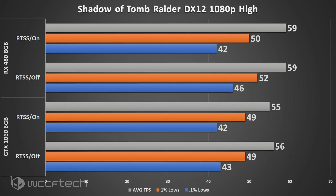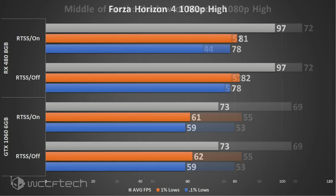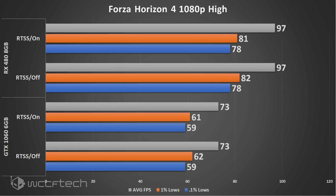Moving on to Middle-earth: Shadow of War, there's another pretty hefty difference — a 6 FPS difference on the 0.1% lows. The averages didn't budge and the 1% lows stayed about the same, but a 6 FPS hit that's greater than 10% on the 0.1% lows is a pretty big hit. For Forza 4, we're again looking at margin-of-error differences, so not a whole lot to talk about there.